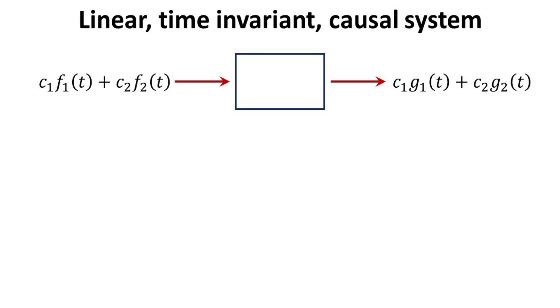Let me first define what is a linear, time-invariant causal system. A system is linear if and only if it satisfies the superposition principle, which means that a linear combination of inputs Ft to the system produces a linear combination of the individual outputs Gt.